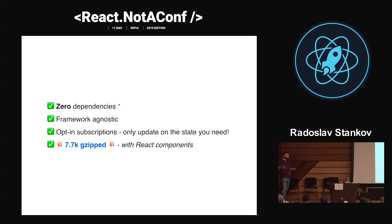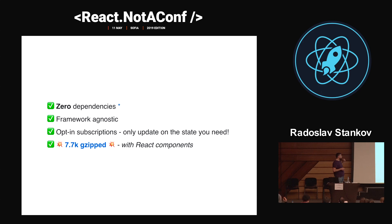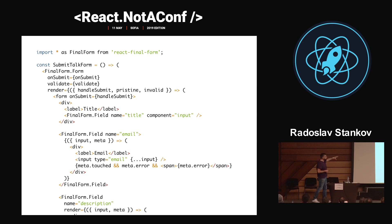It has something called opt-in subscriptions. The idea is — I don't know if you know this — but right now every time I press a key I'm re-rendering my entire form. React is really good at knowing how to update the DOM, but I'm still re-rendering. So Final Form has this opt-out subscriptions feature. And it's only 7.7 kilobytes when bundled with its React bindings. Also, Final Form is not React-specific — it has its core state machine engine and then React bindings. So how does it look like?